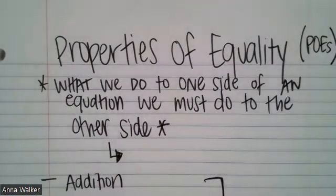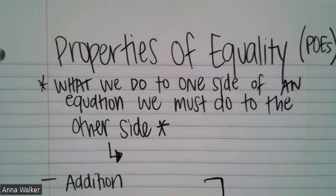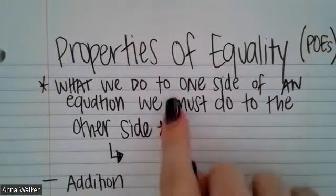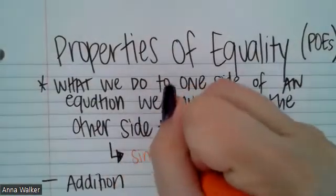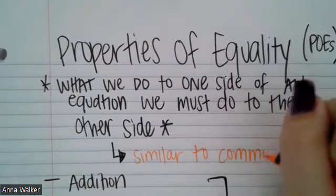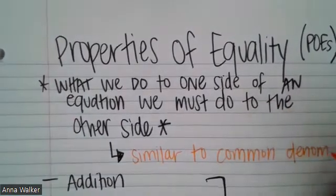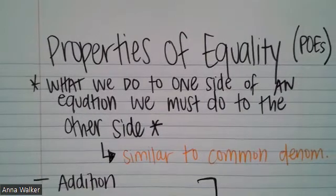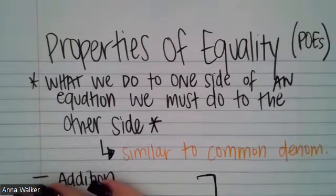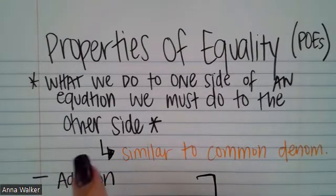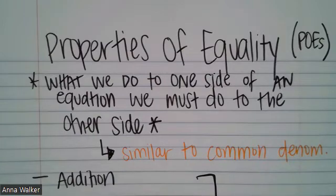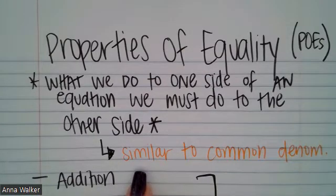Another way to think about this is like when we were adding and subtracting fractions — when we found common denominators, we had to go and adjust the numerators in our problem. So what we do to one side of an equation, we must do to the other side. This is similar to common denominators. If you want, take a moment and pause so you can write down the definition: what we do to one side of an equation, we must do to the other side — similar to when we find common denominators.